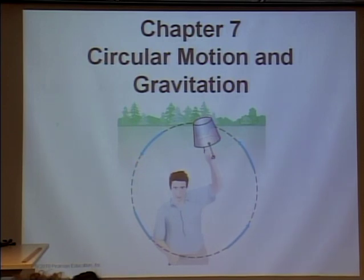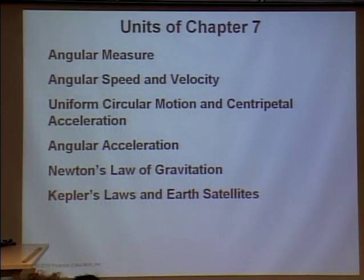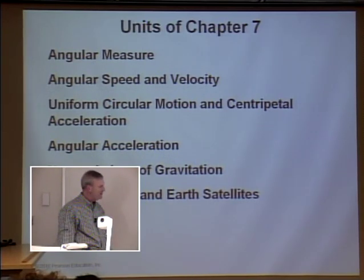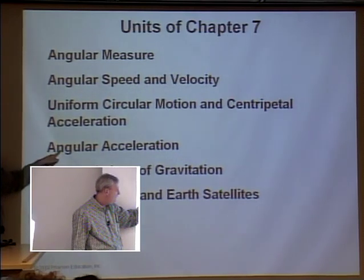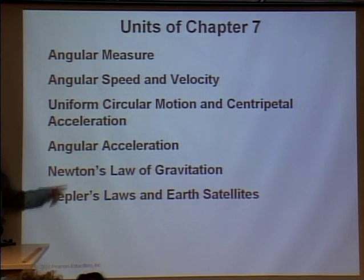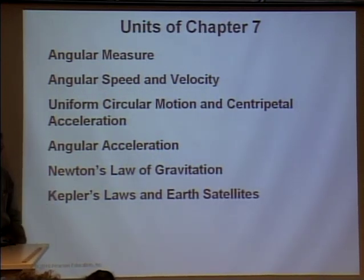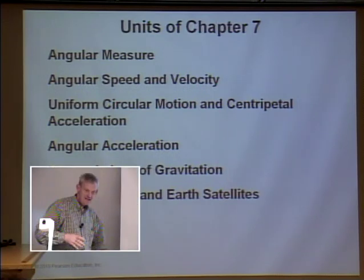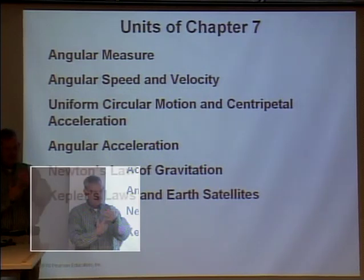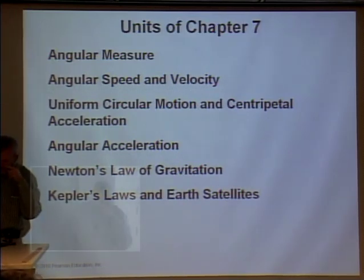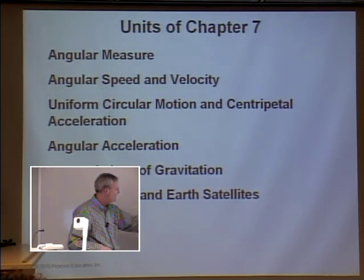We're going to talk about angular measure, angular speed and velocity, uniform circular motion, centripetal acceleration, and angular acceleration — that's when we speed up. You're all acquainted with blenders. If you make a smoothie, those blades go from zero to a big omega really fast. Omega is in radians per second. Just like in chapter two, if something starts from rest and ends at 60 mph, it has to have an acceleration — same thing here but angular.